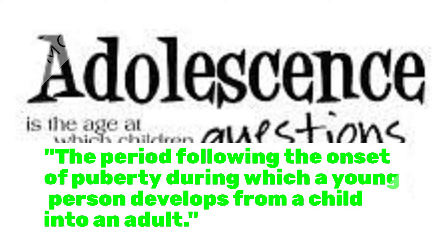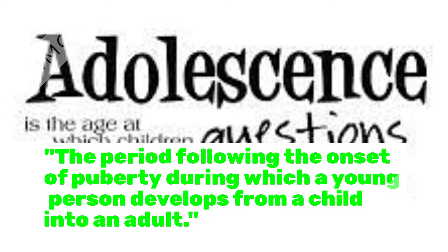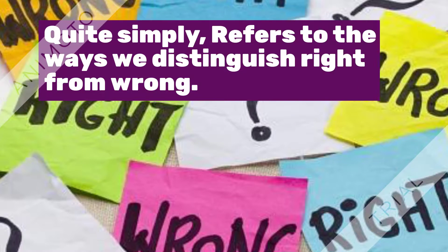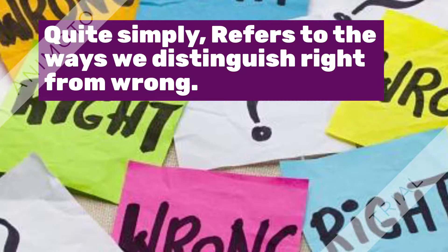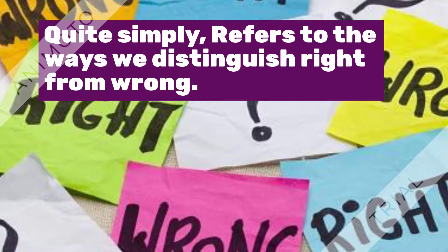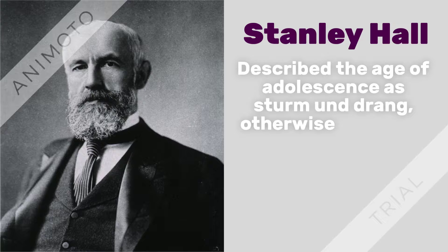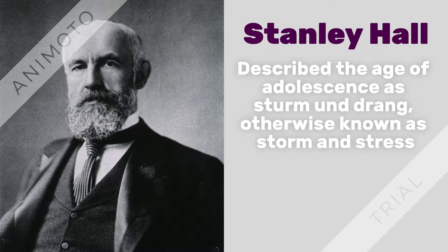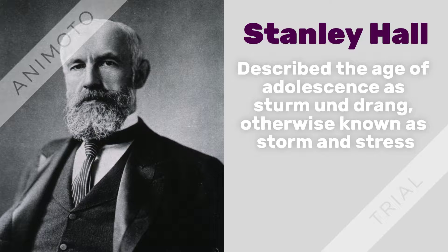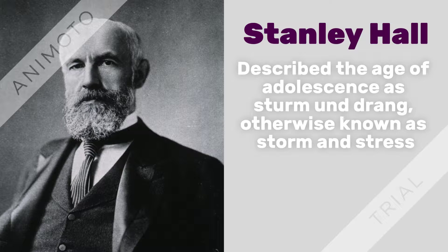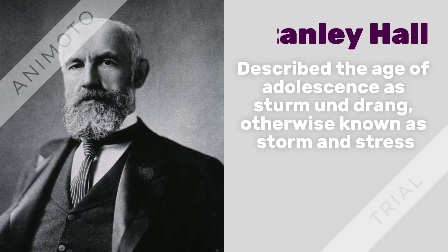Adolescence is defined as the period following the onset of puberty during which a young person develops from a child into an adult. Moral development refers to the ways we distinguish right from wrong as we grow and mature. Very young children generally do not have the same level of moral development as adults. In Samuel Hall's theory of adolescence, he determined that the age range for adolescence is 12 to 25 years and he describes adolescence as storm and stress, which is a psychological theory that adolescence is a time of idealism, ambitiousness, rebellion, passion, suffering, as well as expressive feelings. His theory states that adolescence recapitulates the turbulent transition period of time in human history.